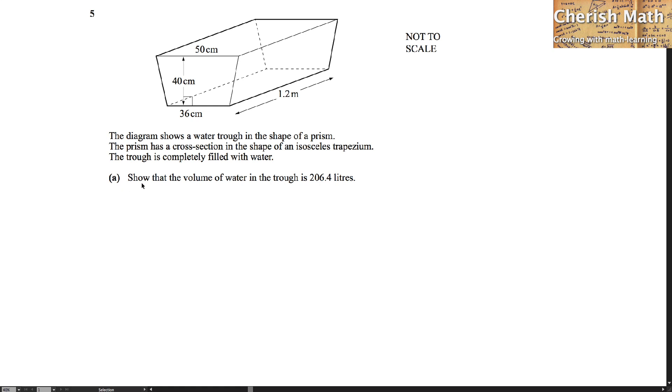Part A shows that the volume of the water in the trough is 206.4 liters. First step, by converting the length of the trough to centimeters. I will just need to multiply by 100 and I produce 120 centimeters as the length of the trough.